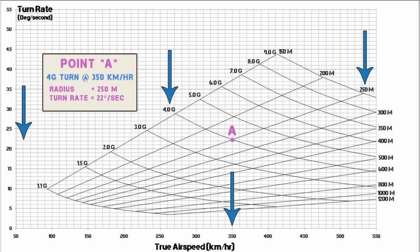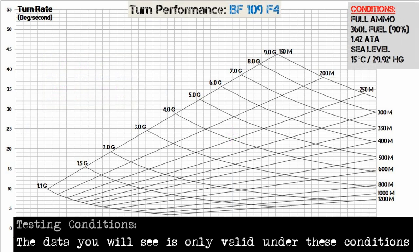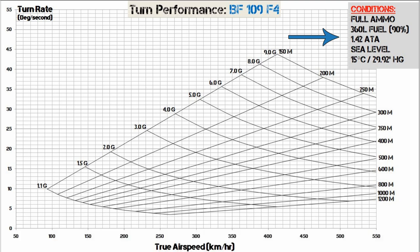Now that we understand how to read this graph, we're going to implement the BF-109's performance over the top. When doing the testing, everything has to be under the same test conditions, because the data is only valid under those conditions shown in the top right. If you test multiple airplanes under the same conditions, you can make valid comparisons. The first thing we look at is max airspeed in level flight, which for the BF-109 was around 547 kilometres per hour, represented by the purple line.